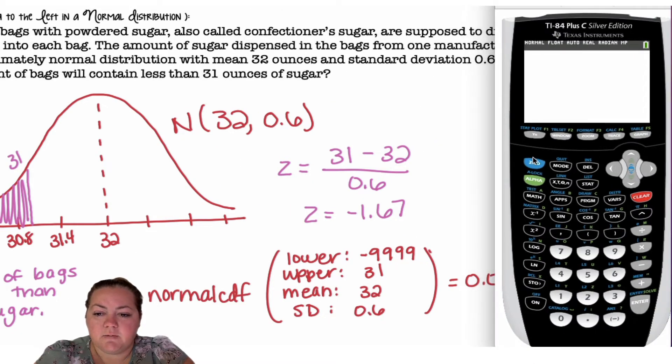So doing this step in the calculator, we're going to go to 2nd, VARS, which is our distribution menu, and we're going to go to normal CDF. It's going to ask for lower bound, upper bound, mean, standard deviation.